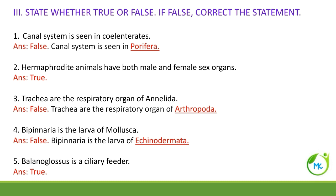State whether true or false — if false, correct the statement. Canal system is found in Coelenterata — it is false, because canal system is not found in Coelenterata; it is found in Porifera. Hermaphrodite animals have both male and female sex organs — it is true. Trachea are the respiratory organs of Annelida — it is false, because trachea are the respiratory organs of Arthropoda.